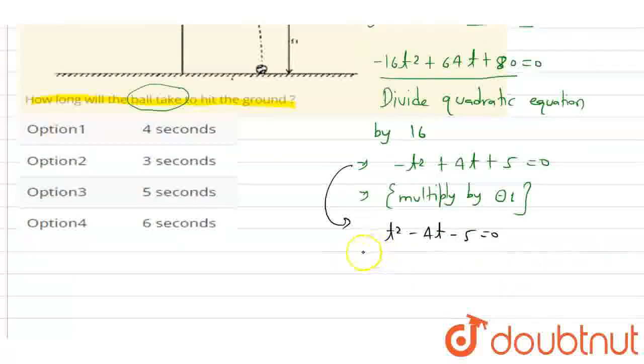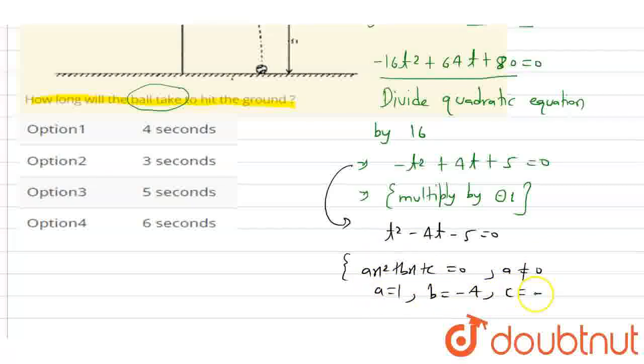Now students, the quadratic equation format is ax square plus bx plus c equals to 0. Here we have x maximum power 2 and a is not equals to 0. By comparison, a is 1, b is minus 4, and c is minus 5.